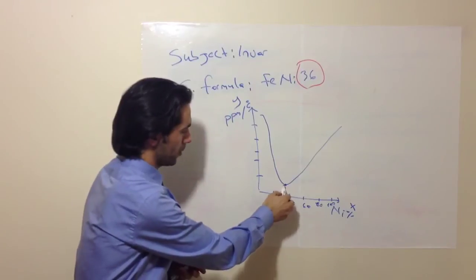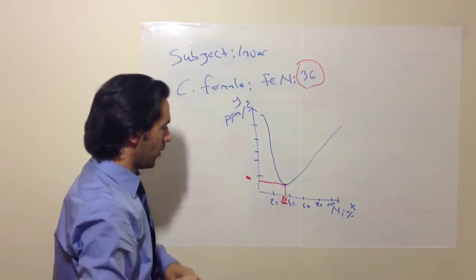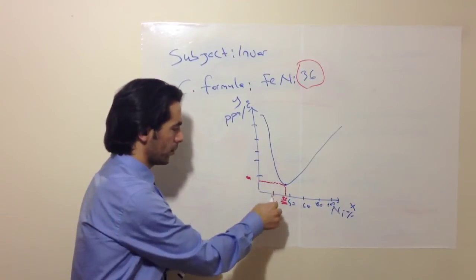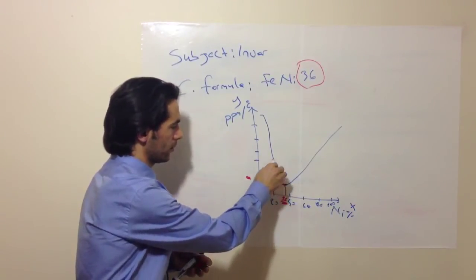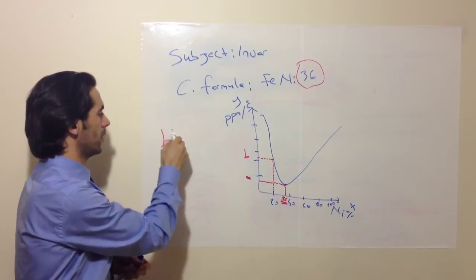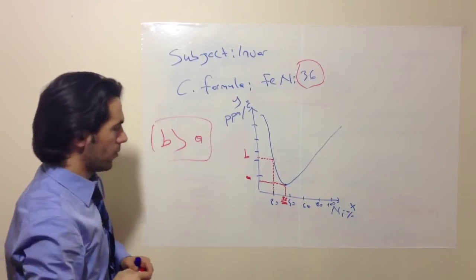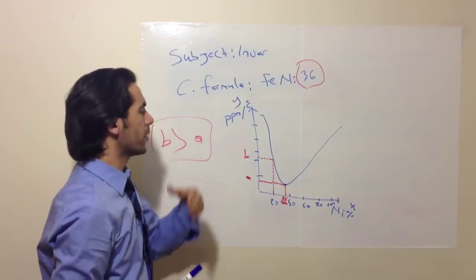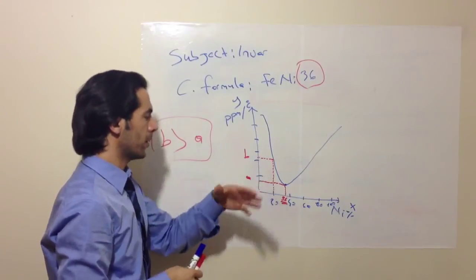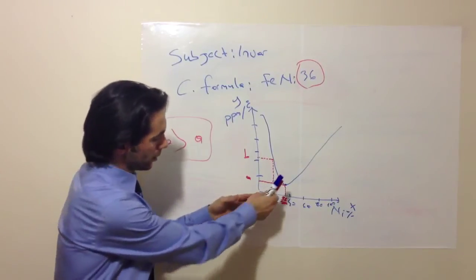So for example, this is our A point. If we add less nickel, for example 20%, this is our B point. As you see B is bigger than A. So as we increase the amount of nickel, we get the lower thermal expansion rate. But until what point? Until 36.